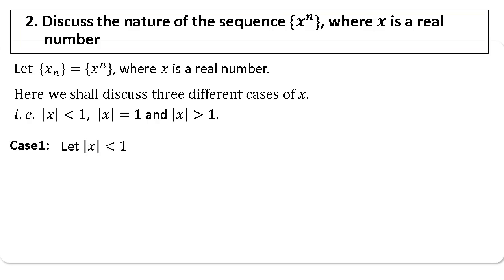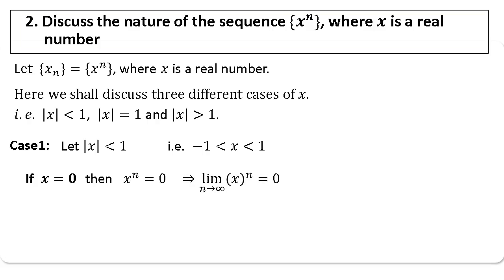Case 1: |x| < 1, meaning x lies in (−1, +1). We have two sub-cases. If x = 0, then x^n = 0, so the limit of x^n is 0. By the definition of convergence of a sequence, the sequence is convergent when x = 0.